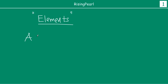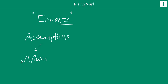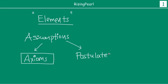We saw that those assumptions he actually put into two groups. He called them axioms. Axioms were assumptions which were related to mathematics in general, and they were not really tied up to geometry itself. And then there was another group of assumptions called postulates. Postulates were actually assumptions which were related to geometry. So, we are going to talk about some of the important axioms and postulates.